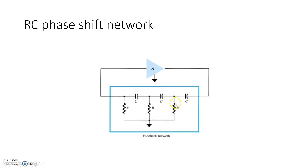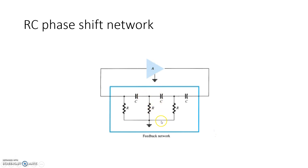The question is: why can't we use only one RC section? The idea of using this RC phase shift network is that the inverting amplifier provides 180 degree phase shift, so one more 180 degree phase shift must be provided by the feedback network to satisfy the Barkhausen criteria — that is, for sustained oscillation, the total phase shift on complete loop rotation must be a multiple of 360 degrees.